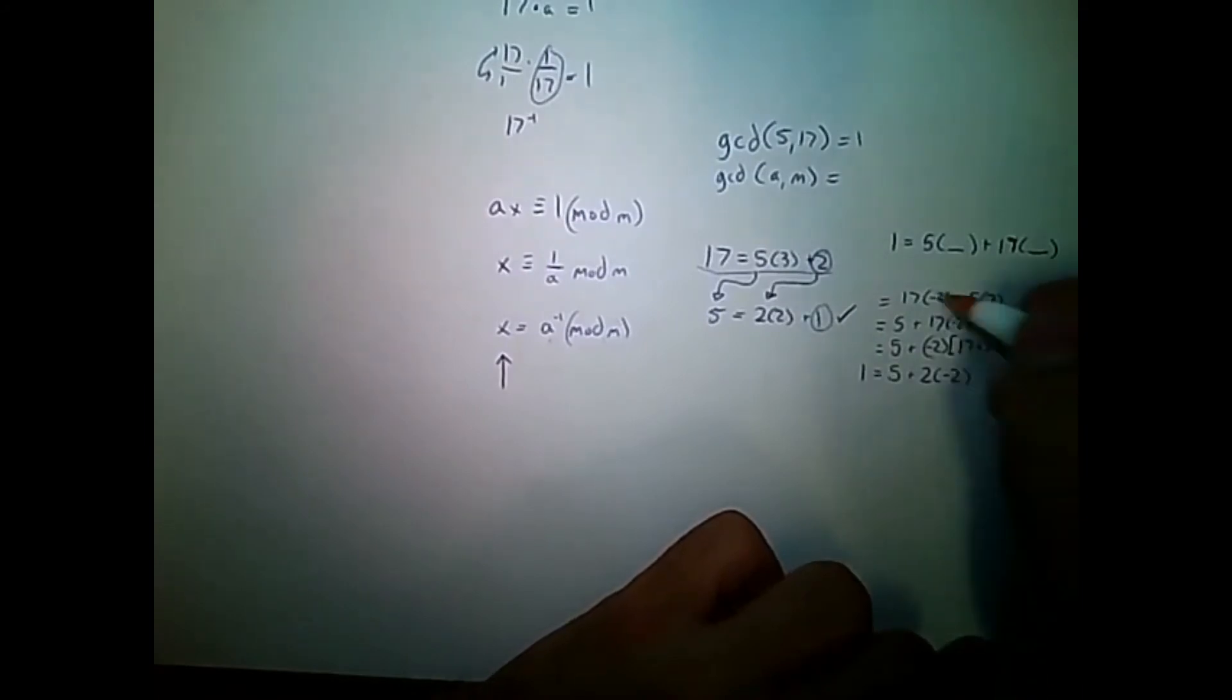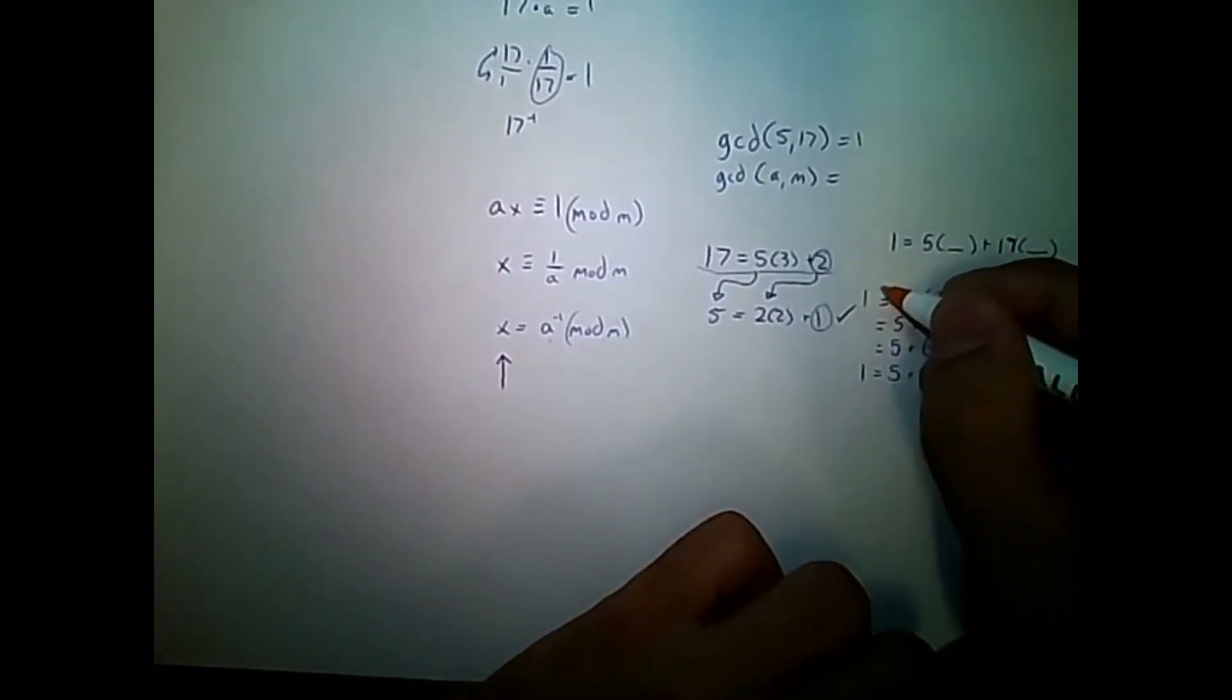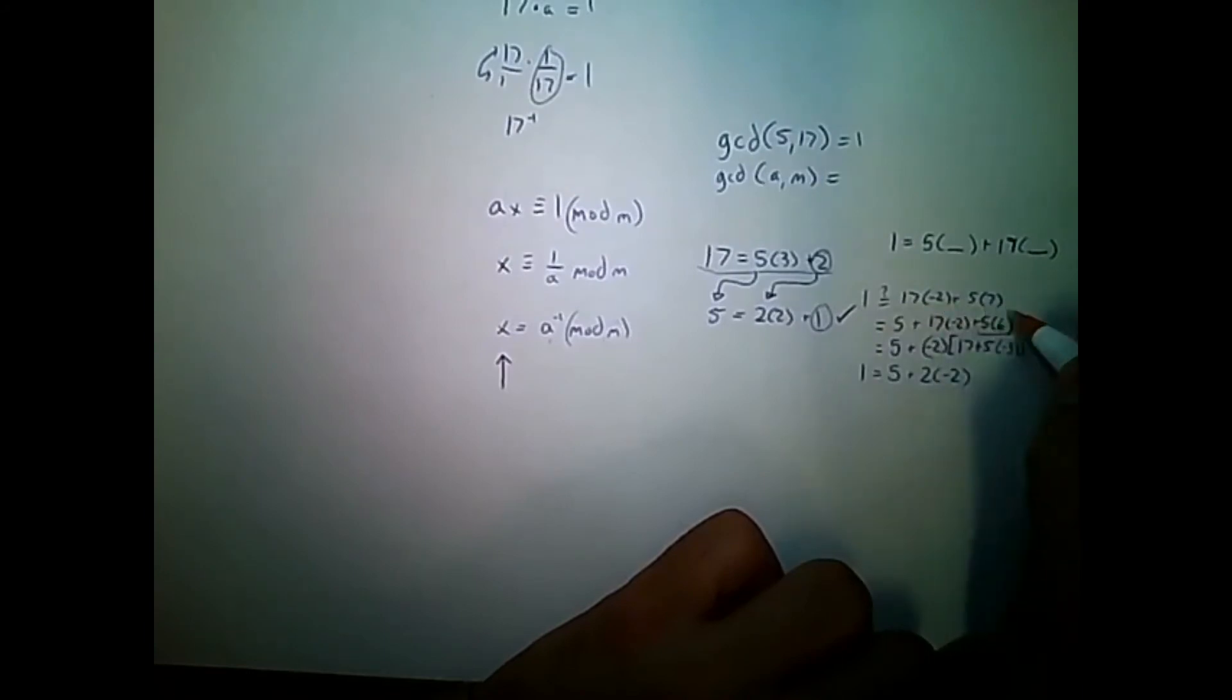So, this was many steps. Let's verify that this still equals 1 here. So, this is negative 34 plus 35. Yep. Still 1. Okay. So, the math is right.